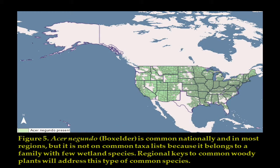The last type of species that gave us a problem was those that are common nationally but come from very small families — families that don't have many species on the National Wetland Plant List. An example is Boxelder, Acer negundo. This species occurs in more than half of the counties in the United States. However, there are only about 12 species from its family on the plant list, so it didn't make the top 10 families nationally.